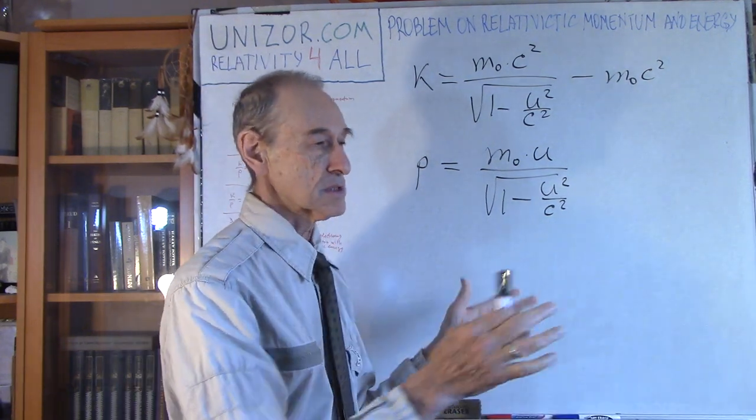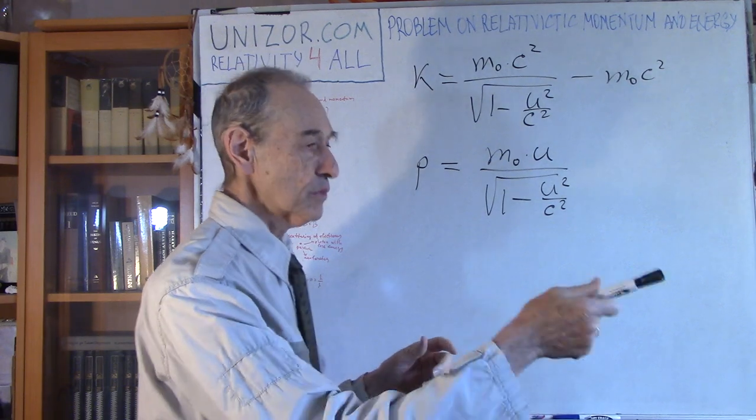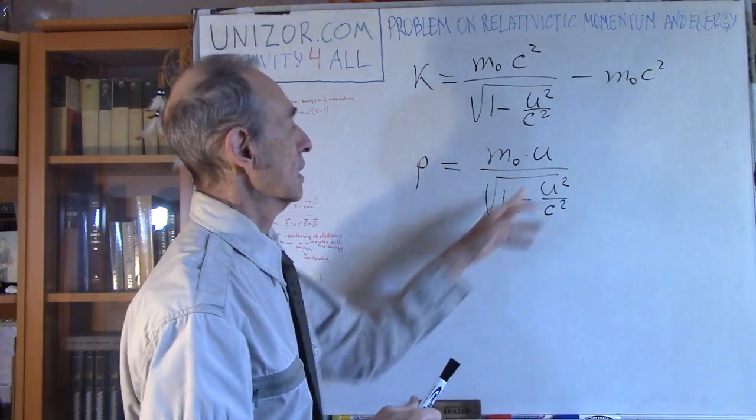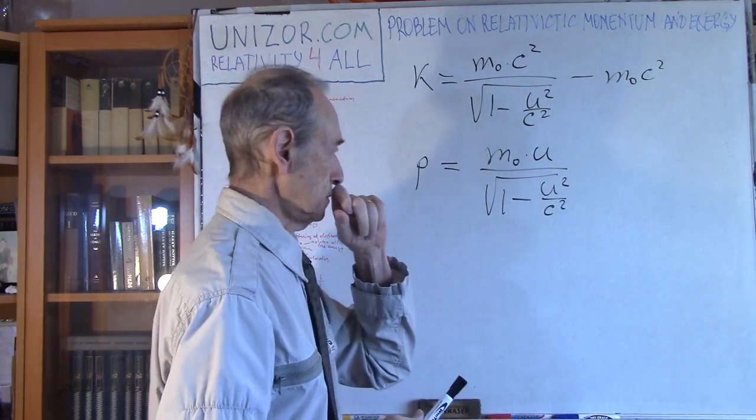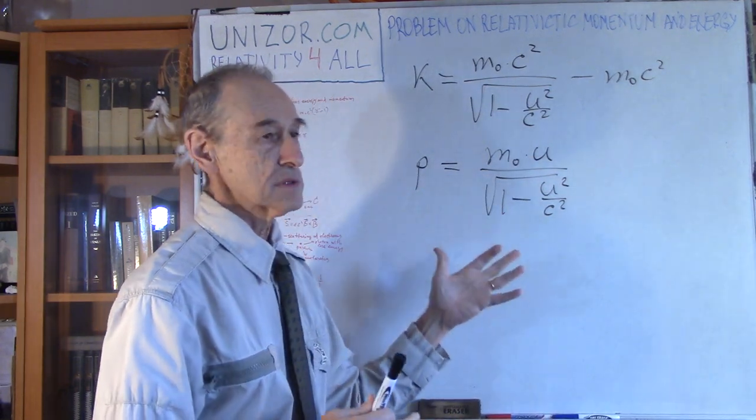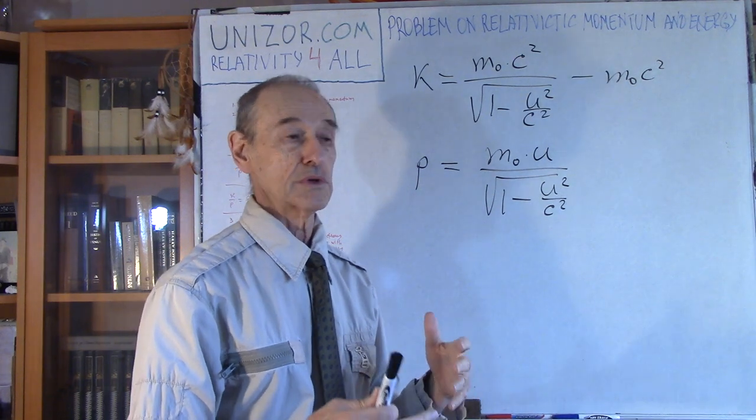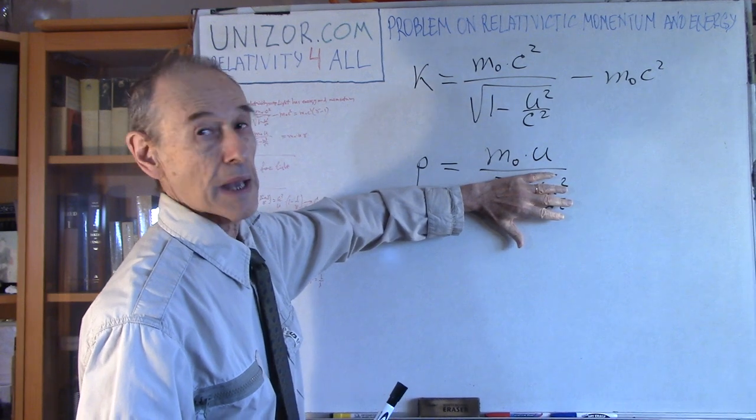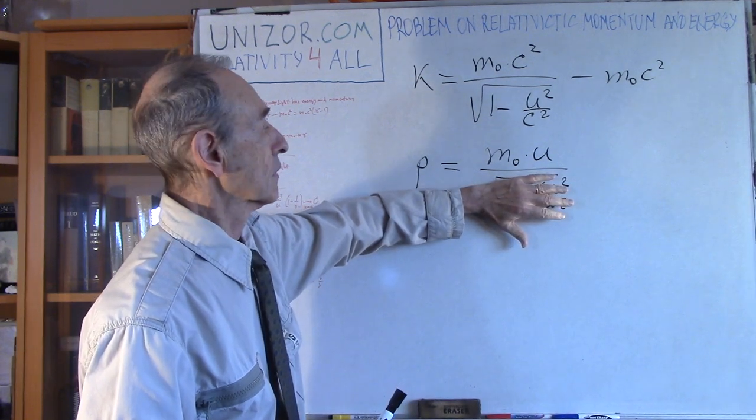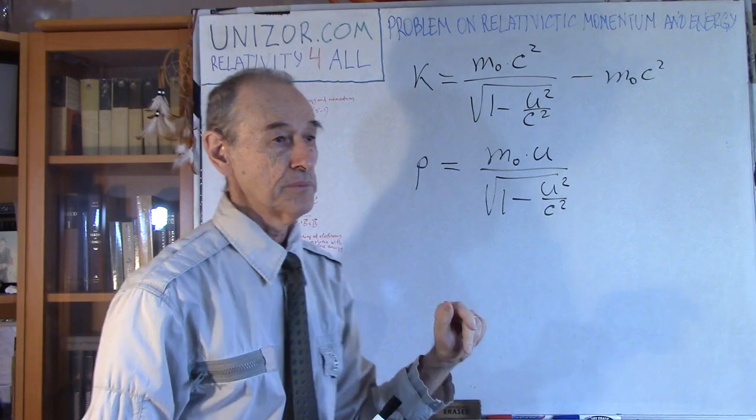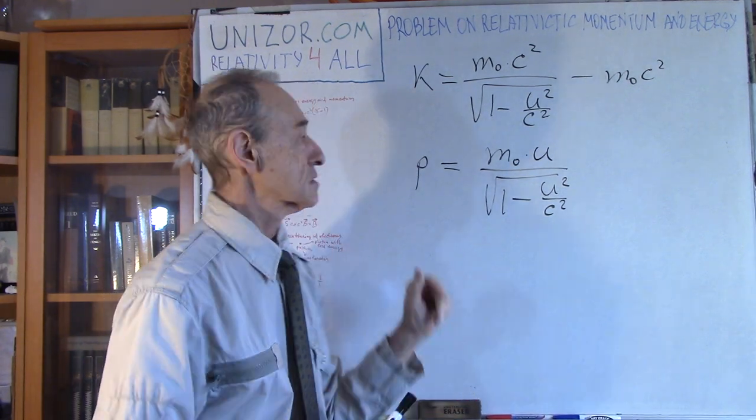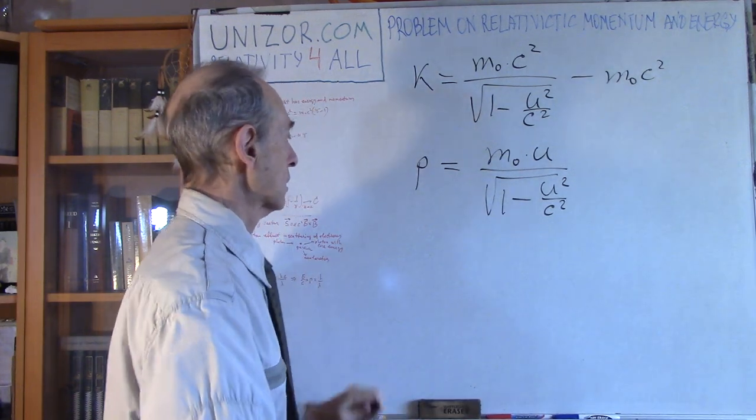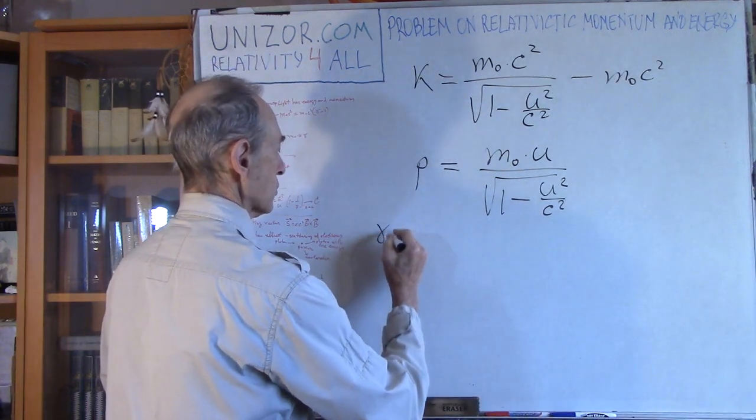Obviously, momentum u is a vector and p is a vector, but right now let's just consider one dimension moving with constant speed. The difference between relativistic momentum and classical momentum: classical momentum is just mass times speed. This particular factor, one over the square root, is called the Lorentz factor, called gamma.